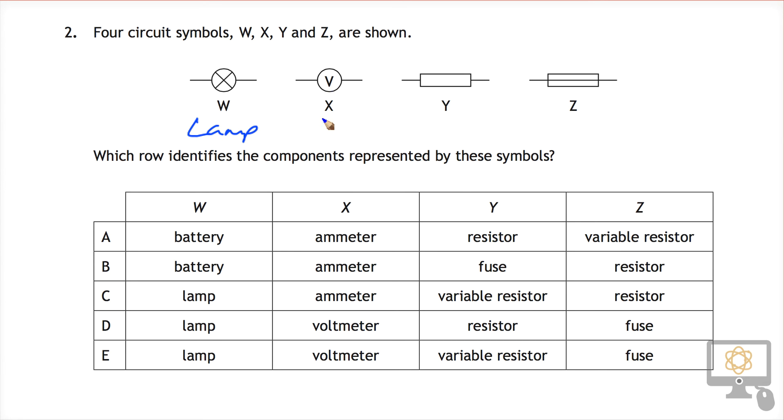X is a voltmeter for measuring the voltage across a component. Y is a resistor. And Z looks very like a resistor, but it's actually a fuse.